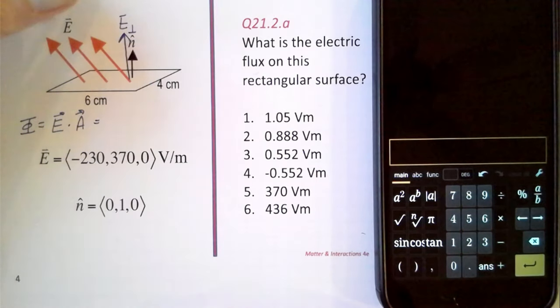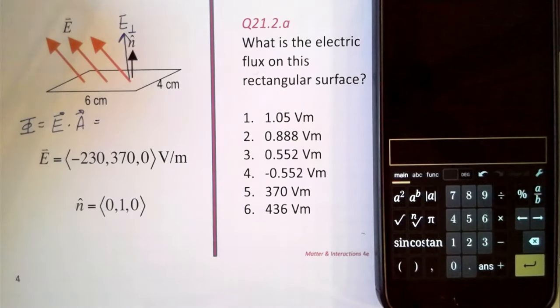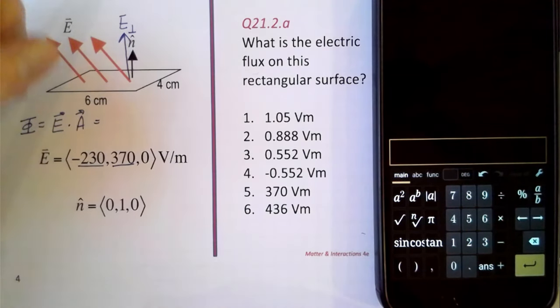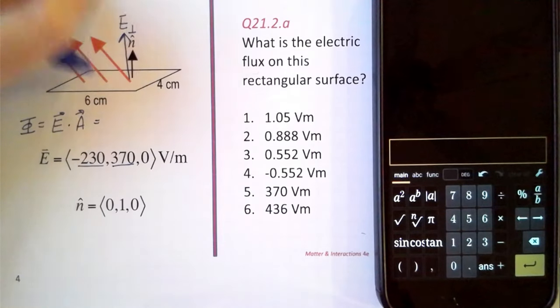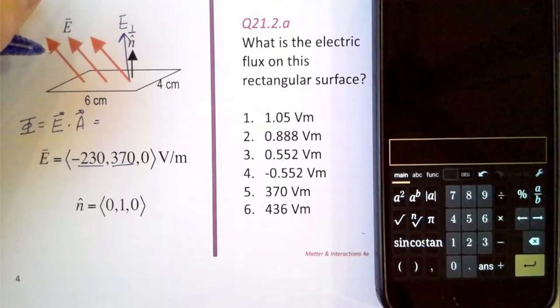So it's going to be E times A times sine or cosine of the angle depending. In this case, we know the x and the y components already. So that means that in this case, it's only the y component that matters in calculating the electric flux.